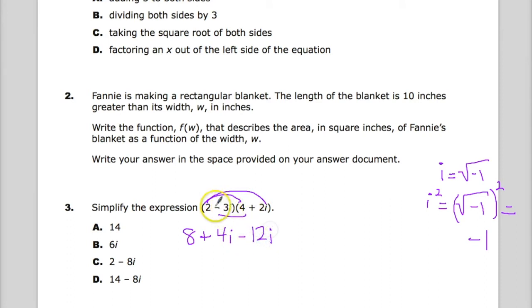Negative 3i times 4 gives you negative 12i. Negative 3i times positive 2i gives me negative 6i squared.